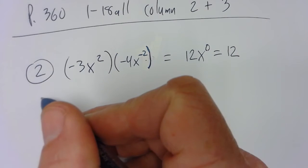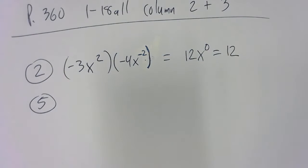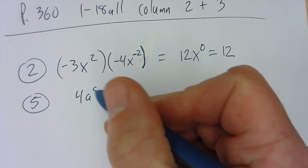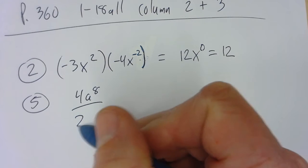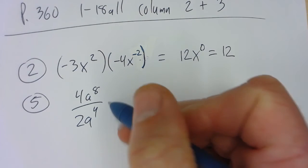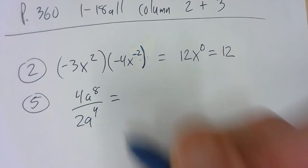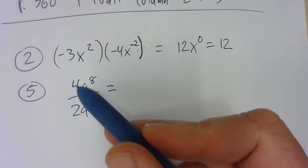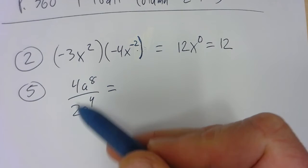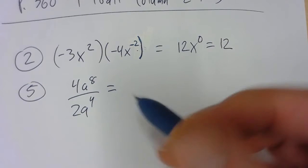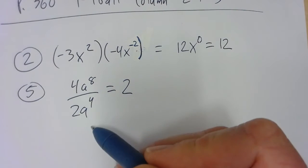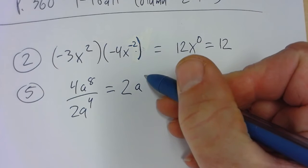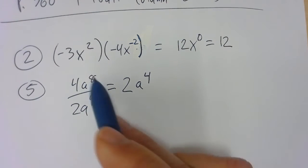The next one down is number 5. It is 4a to the 8th over 2a to the 4th. When we divide like bases, we subtract the exponents. But here we're not subtracting the regular numbers — we're actually dividing them. So 4 divided by 2 is just 2, and then we subtract the exponents: 8 minus 4 is 4.